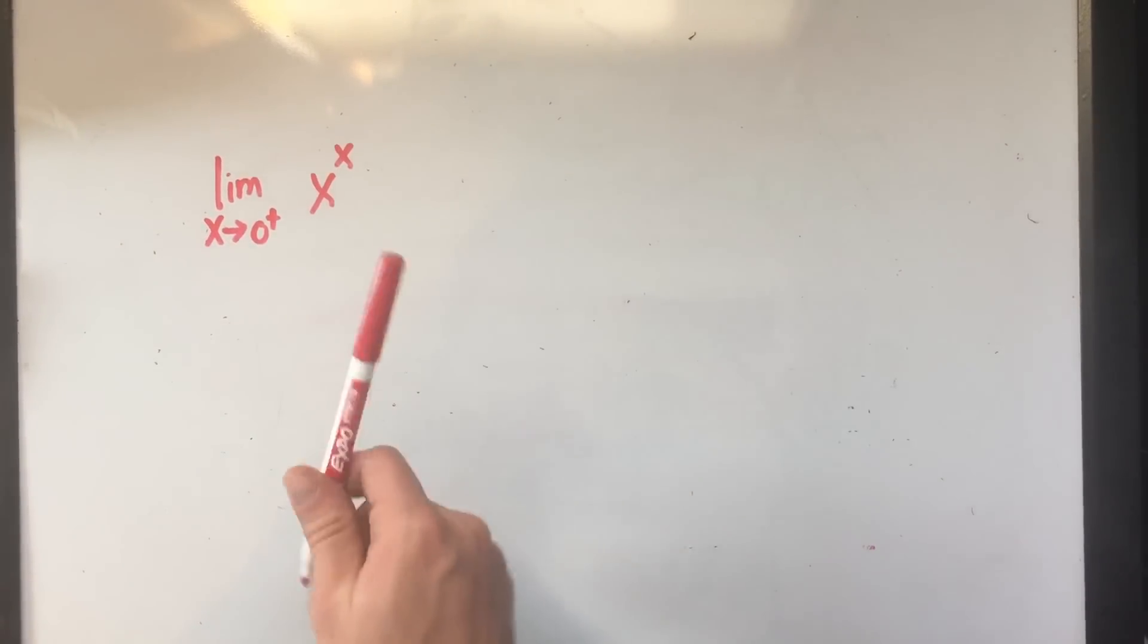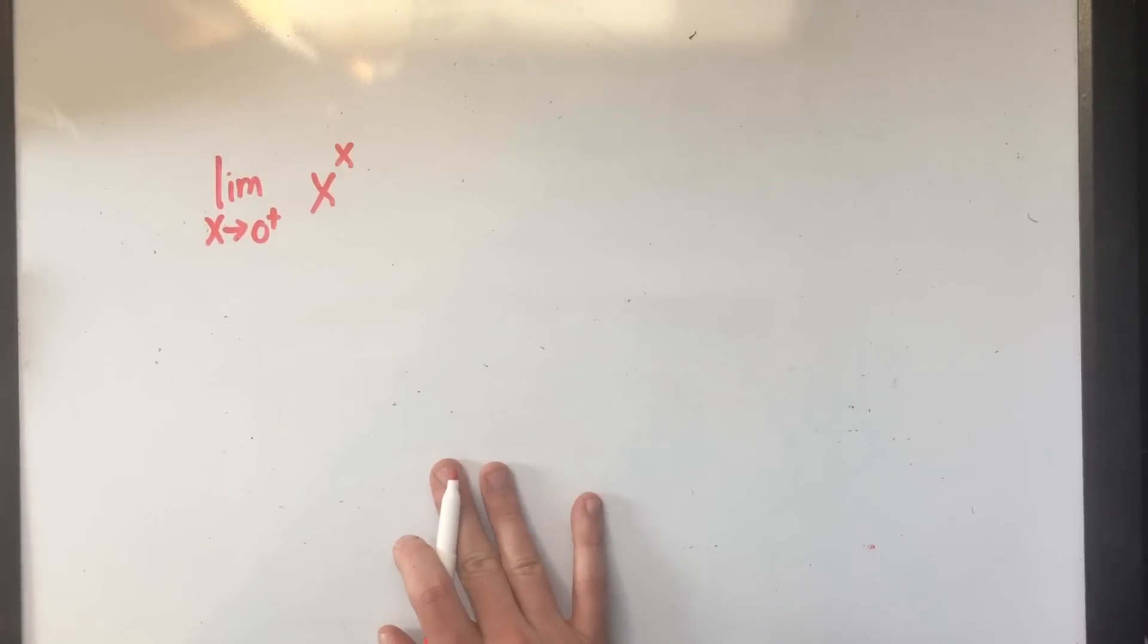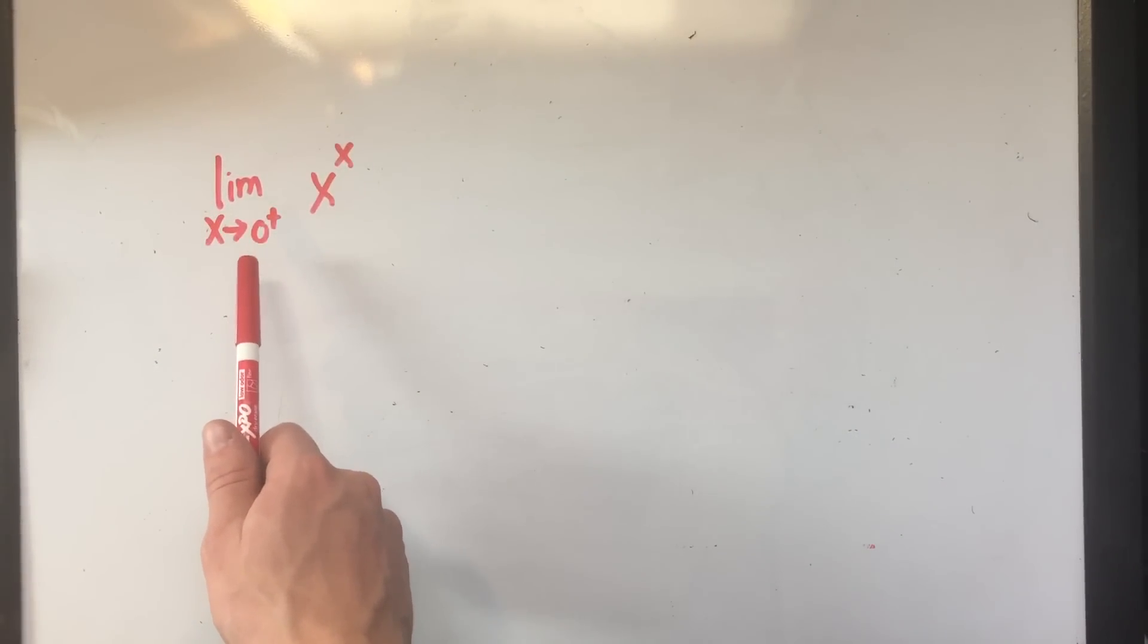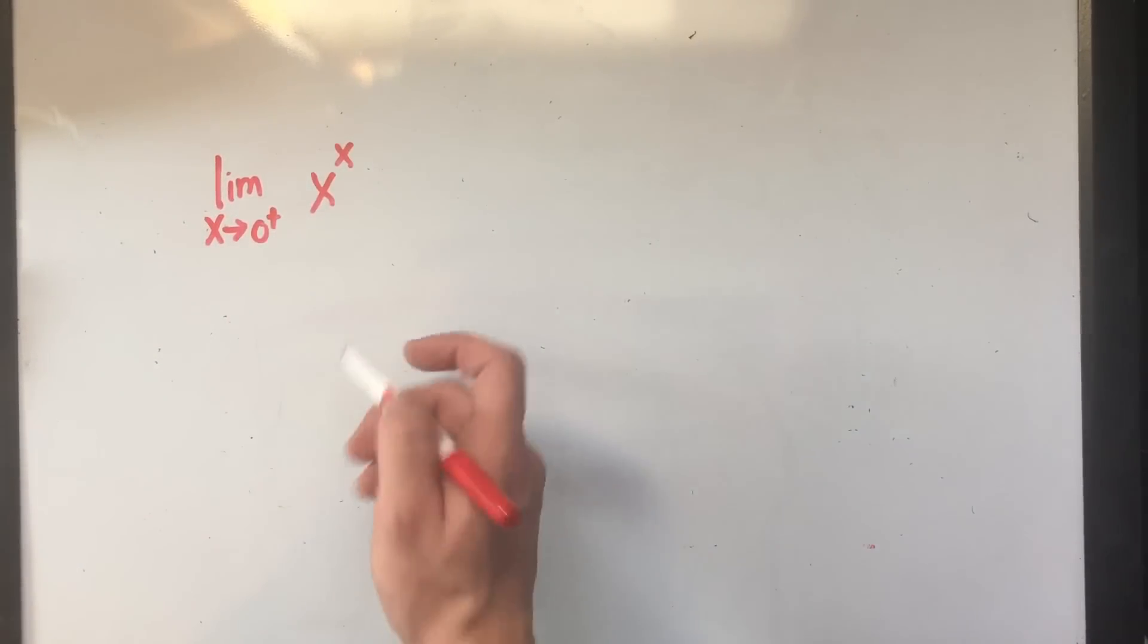I have a nice limit problem here, a very seemingly innocent limit problem. It says that the limit as x goes to zero, zero from the right, zero plus, of x raised to the x.